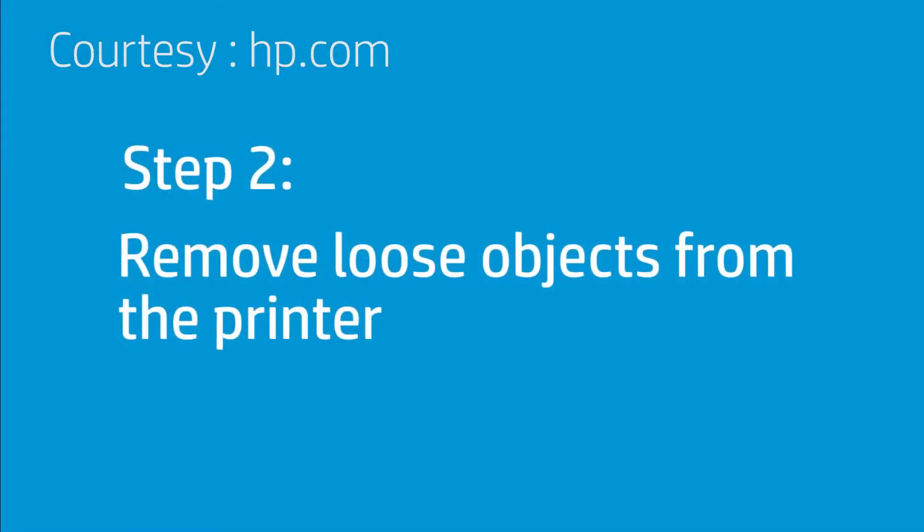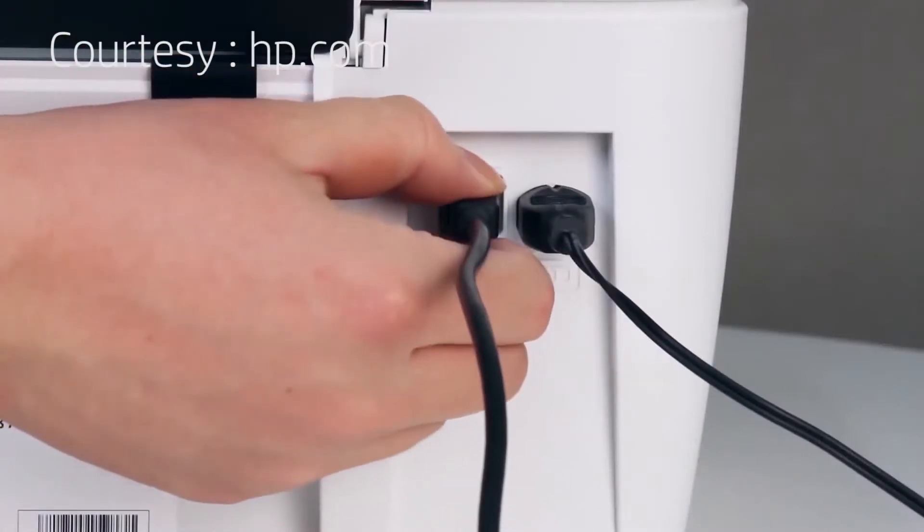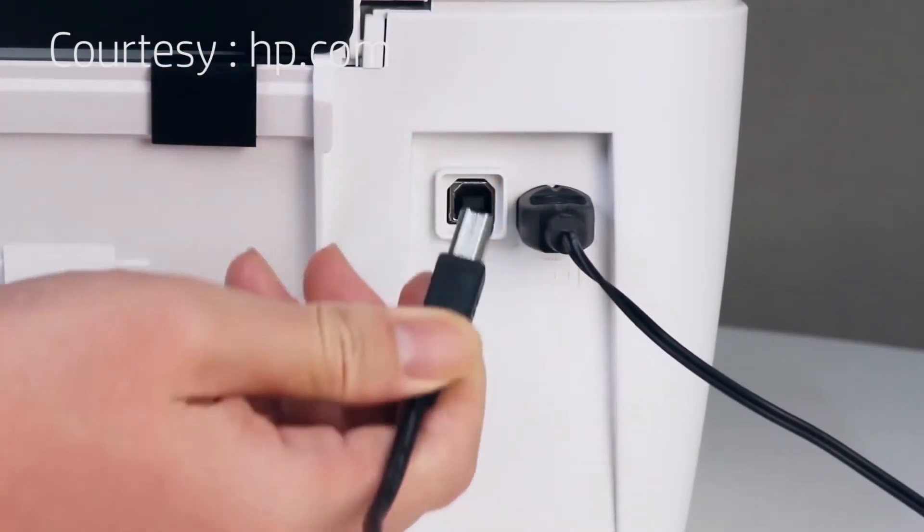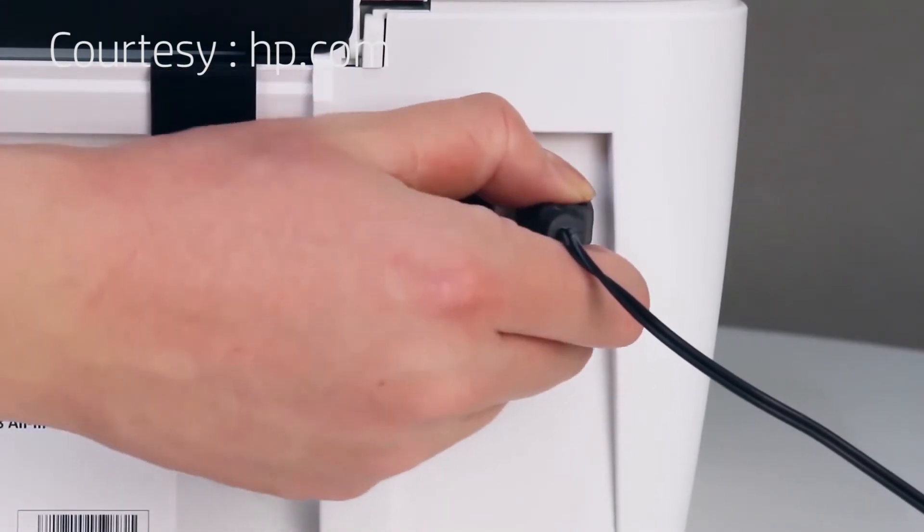Follow these steps to remove any loose paper or debris from the tray. Press the power button to turn off the printer. Disconnect the USB cable, then disconnect the power cord from the back of the printer.